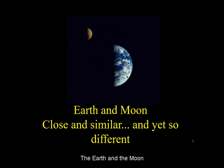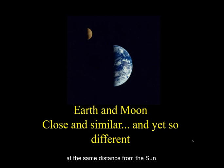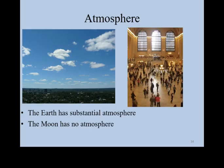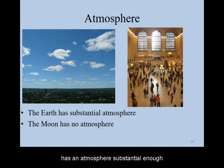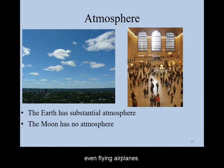The Earth and the Moon are close companions at the same distance from the Sun. The Earth has an atmosphere substantial enough to support life, weather, and even flying airplanes.